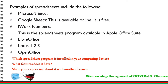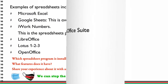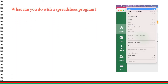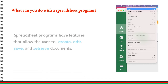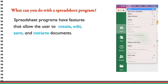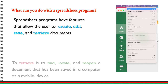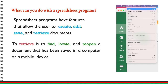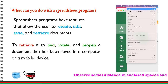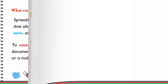Which spreadsheet program is installed in your computing device? What features does it have? Share your experience about it with another learner. Spreadsheet programs have features that allow the user to create, edit, save, and retrieve documents. To retrieve is to find, locate, and reopen a document that has been saved in a computer or a mobile device.